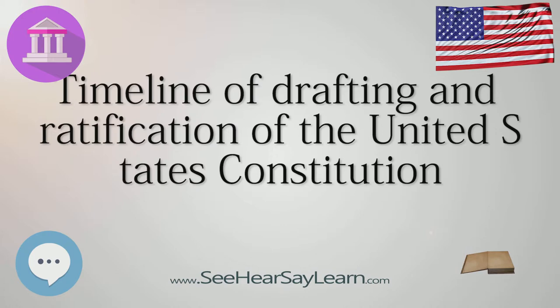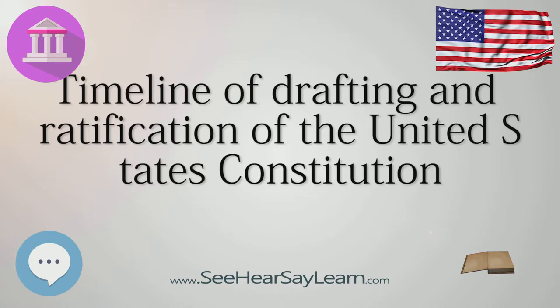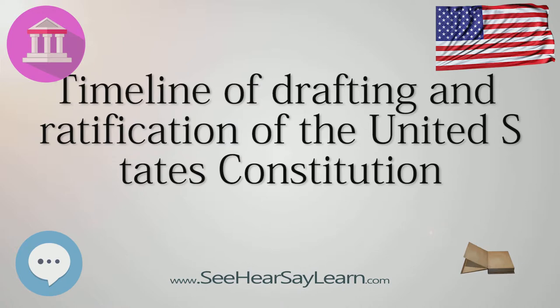December 25: Ratifying Convention Begins in Georgia. 1788. January 2: Georgia becomes the fourth state to ratify the Constitution, 26-0.